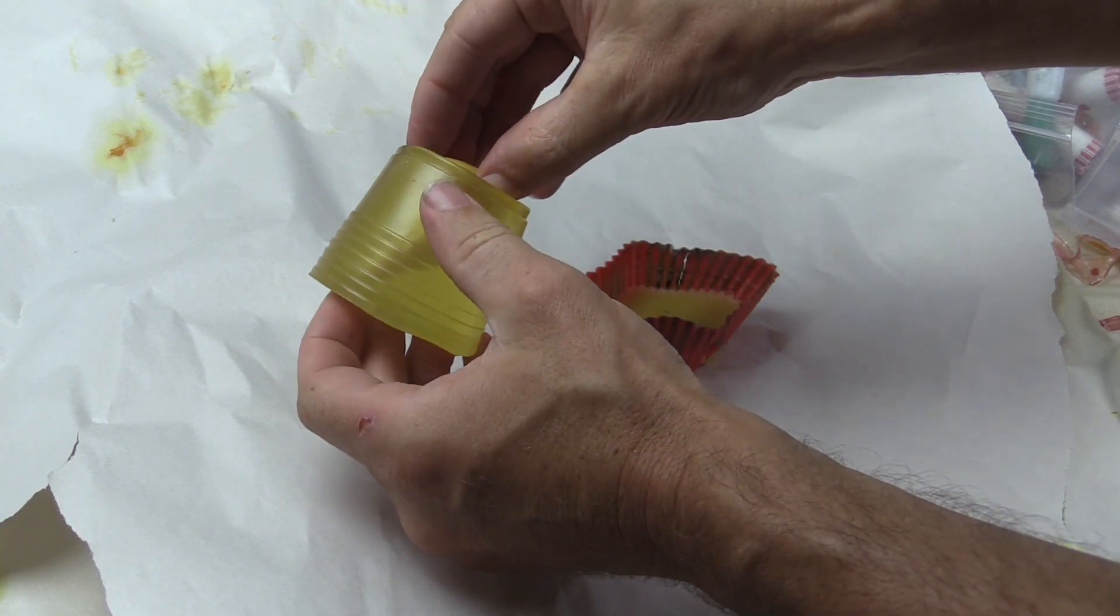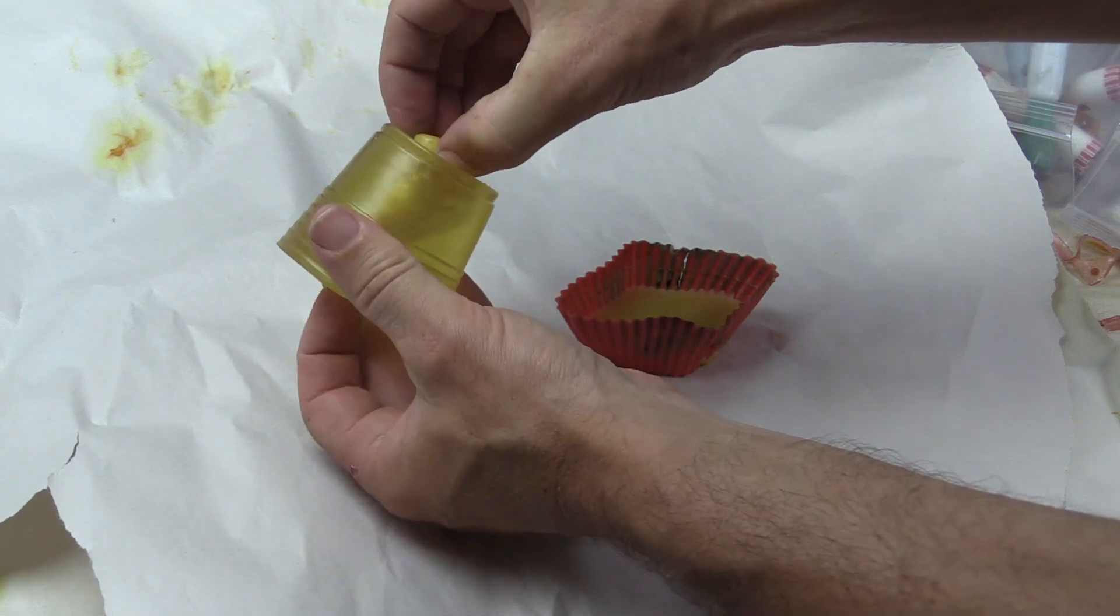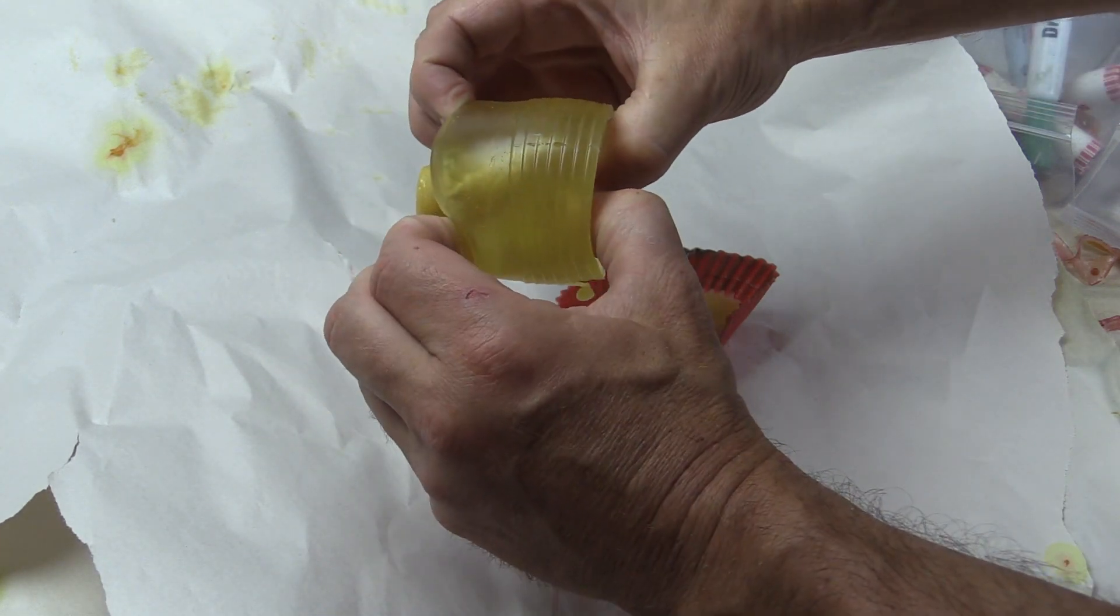If I need to I can cut up the side of it with a knife here but because the ComposiMold is so flexible I can typically just push it out which I do in this case.